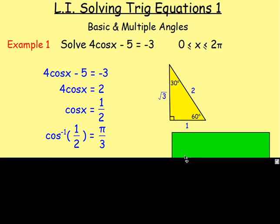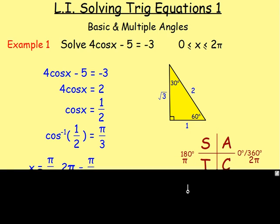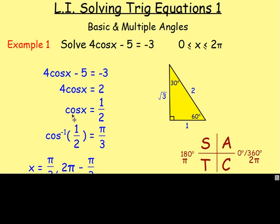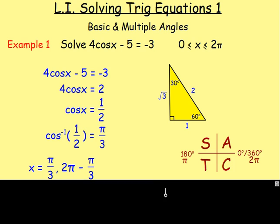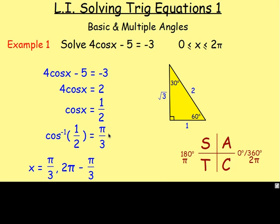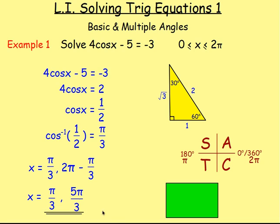From there, think about your CAST diagram. Because cos is positive, it is going to be in the first quadrant and in the fourth quadrant. The first quadrant is your calculator answer or the acute angle you worked out, which was π over 3. To get the answer in C, you do 360 degrees minus whatever you worked out for the acute angle — but because you're in radians, 360 degrees is 2π, so it's 2π minus π over 3.